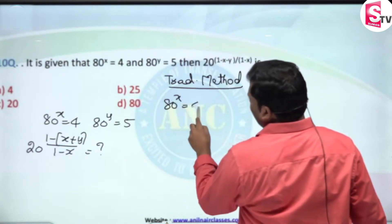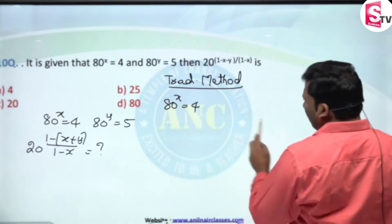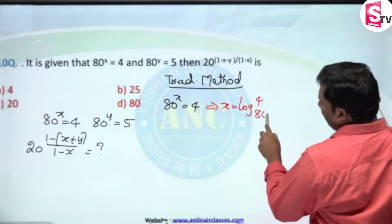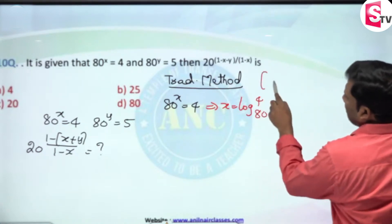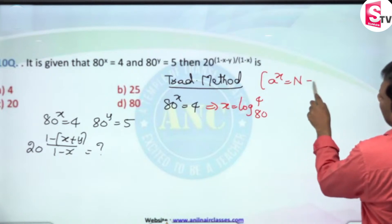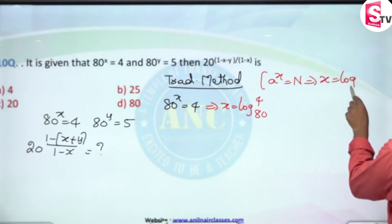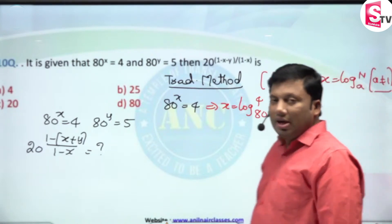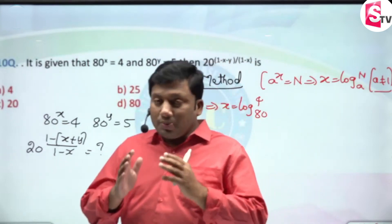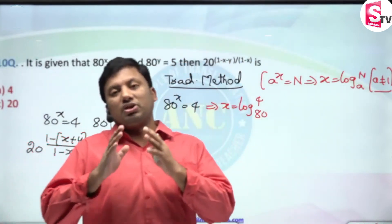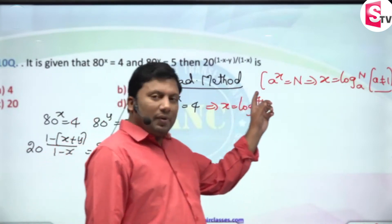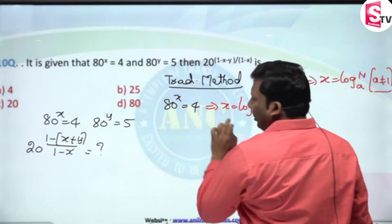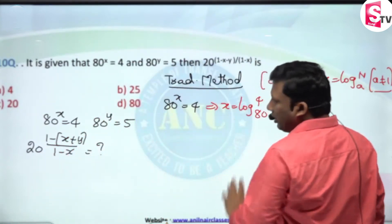Traditional method: 80^x = 4. We convert it into logarithm: x = log 4 base 80. The rule is: if a^x = n, then x = log n base a (logarithm of n to the base a, where the base should not be equal to 1). Exponential and logarithmic functions are inversely proportional to each other. Similarly, 80^y = 5, so y = log 5 base 80.